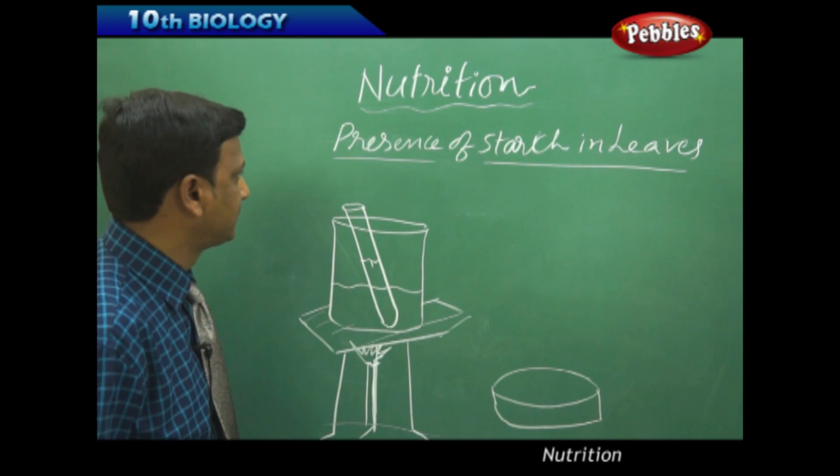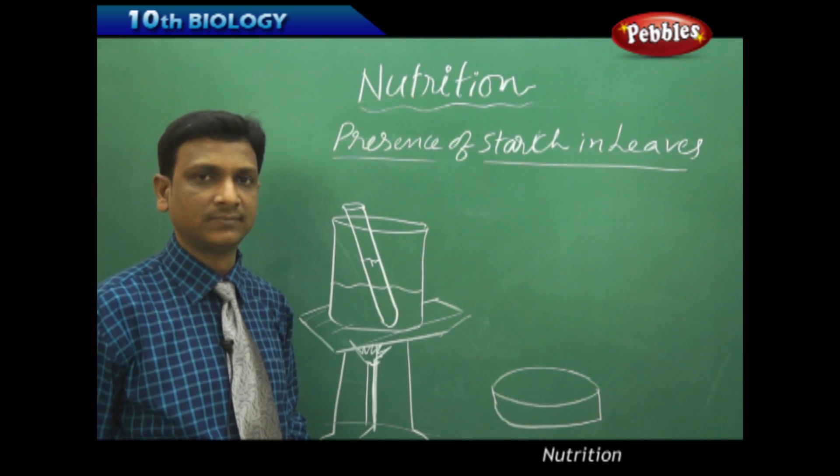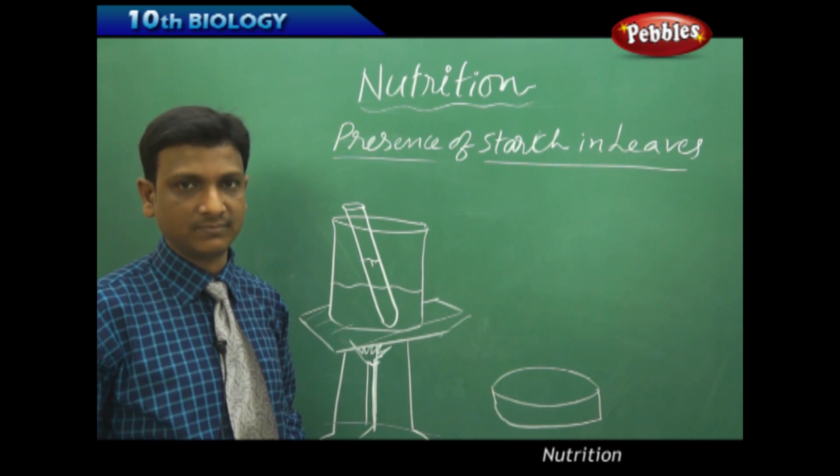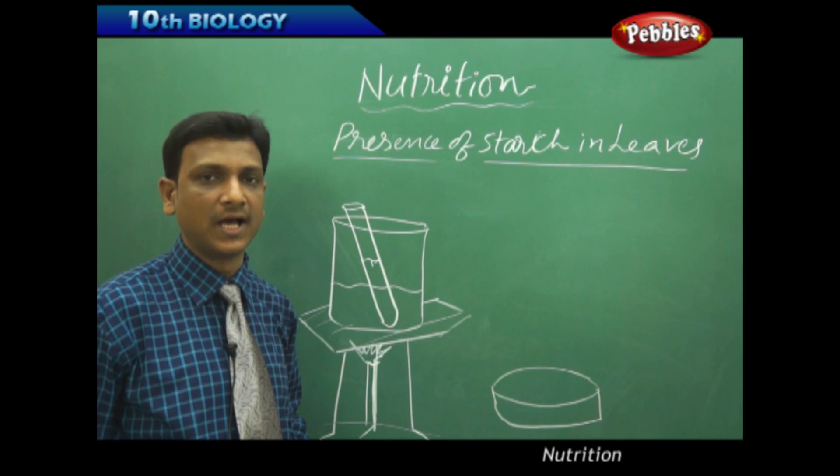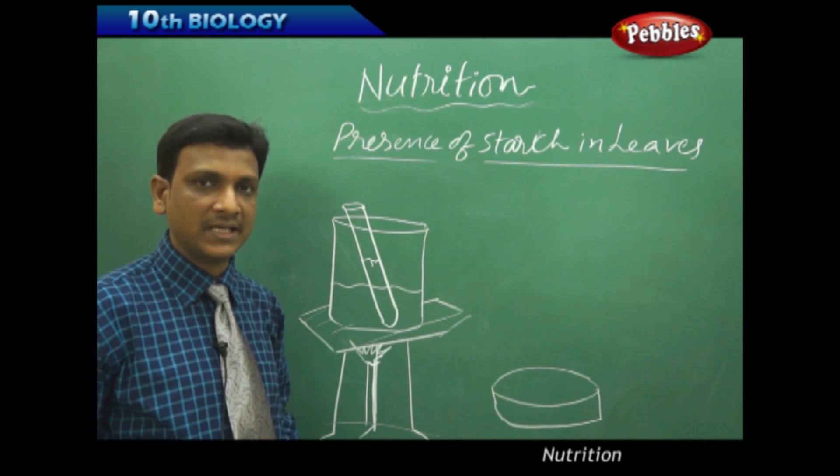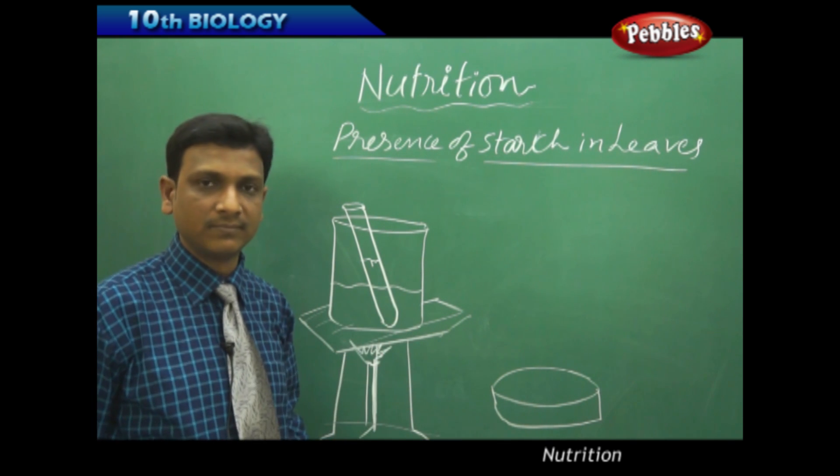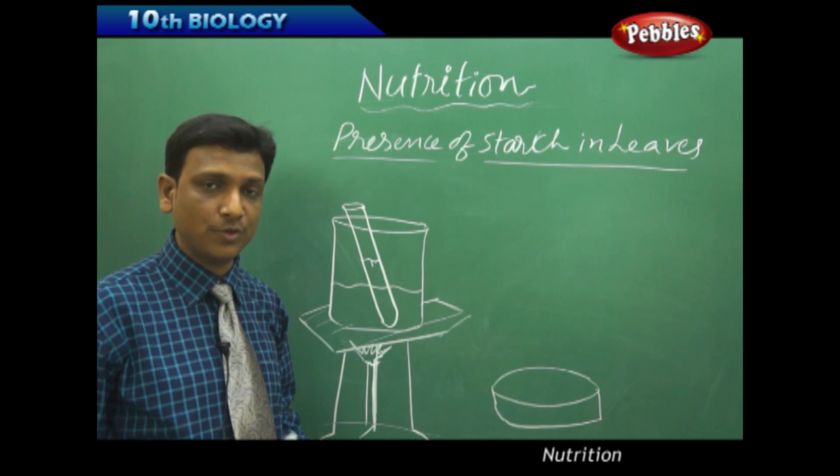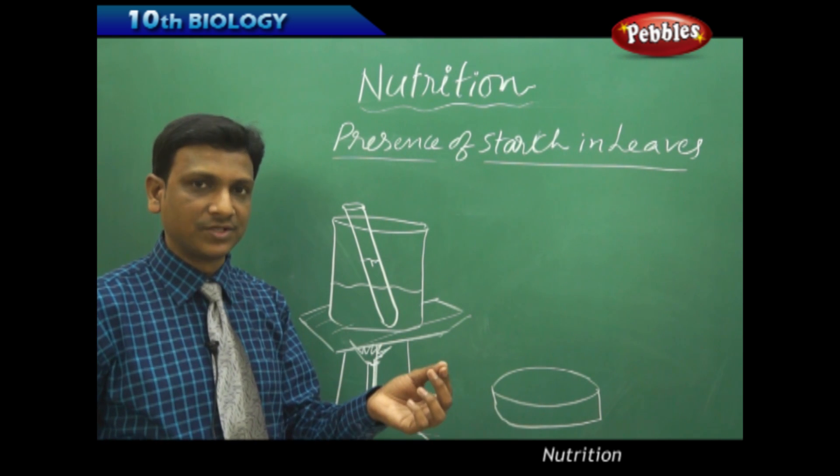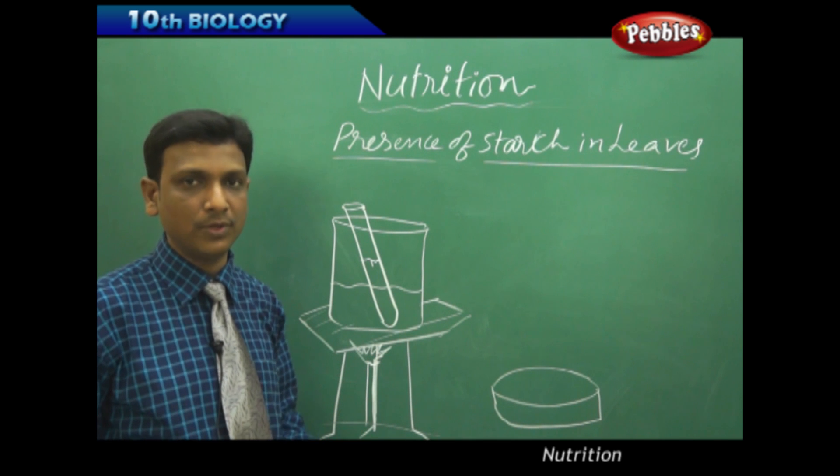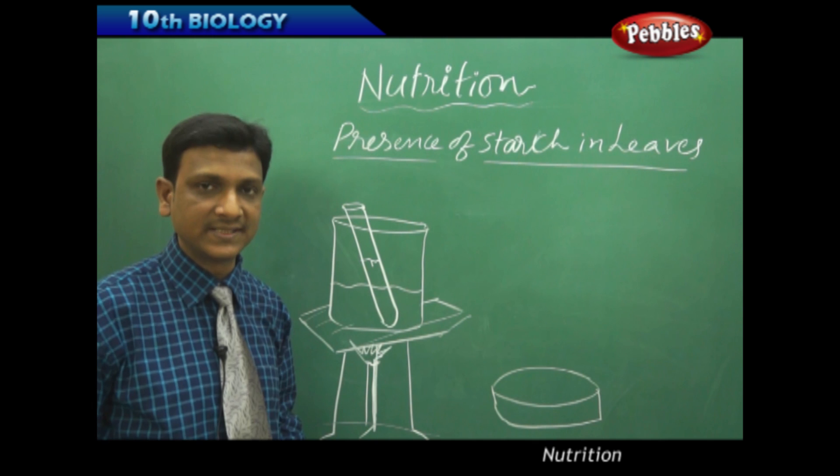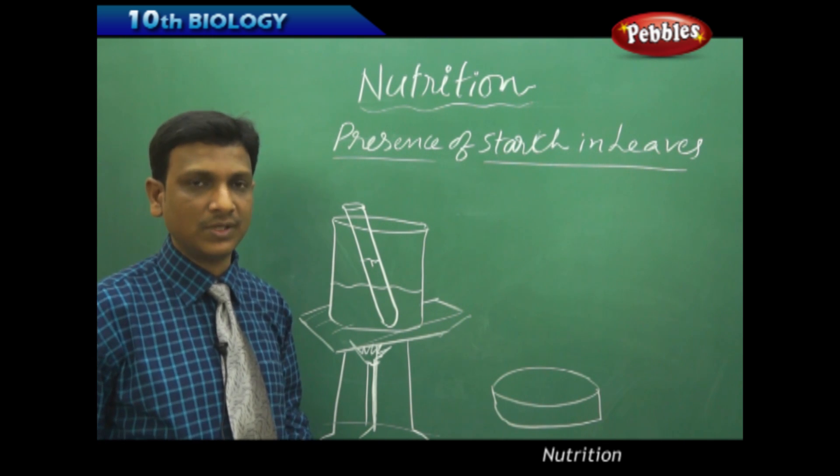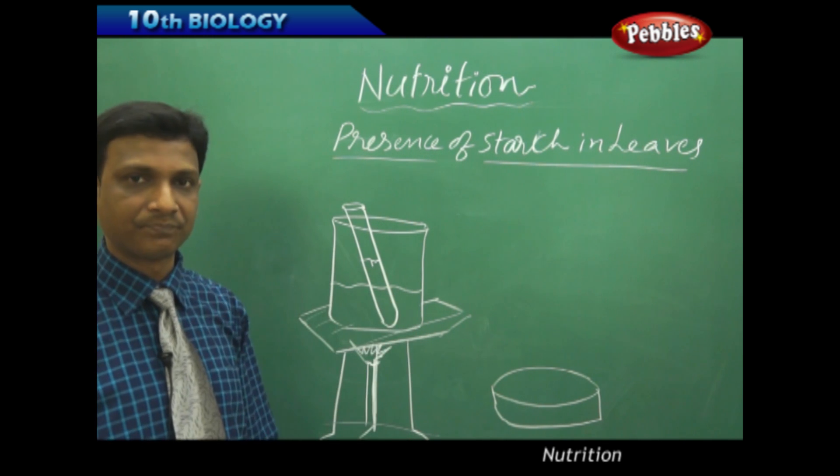Let us see this activity: presence of starch in leaves. Leaves are green in color. We can test the presence of starch with the help of a chemical called iodine. If you have some starch sample, some powdered starch, and add iodine to that, the color of the starch, which is white, turns dark blue. So starch, when it reacts with iodine, changes to dark blue. We know that leaves contain starch.